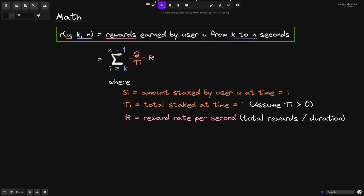s sub i is the amount of tokens that is staked by this user, and T of i is the total amount of tokens staked by all of the users at time t equals i. We multiply this percentage by reward rate per second.